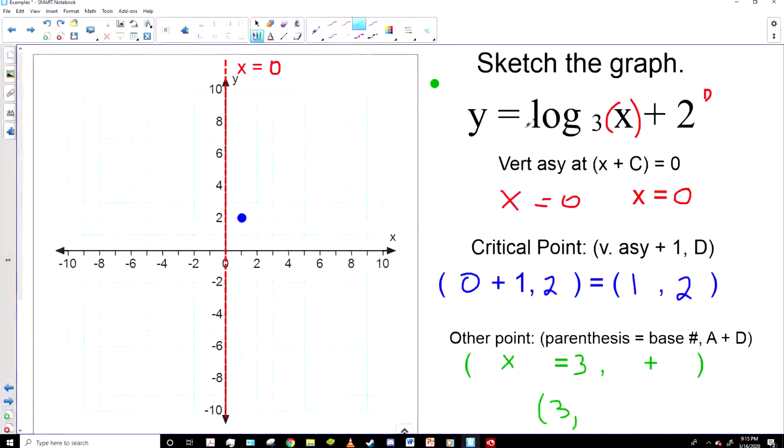And so we end up with just the A term, which is one, plus the D term, which is two. And so our second point is at three, three.